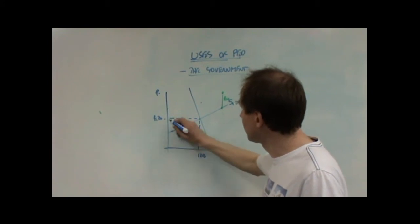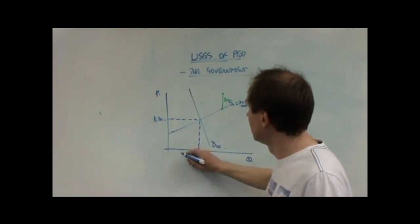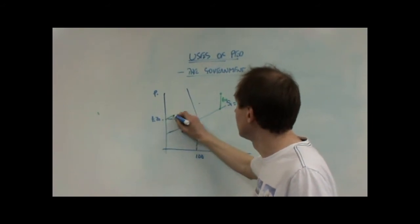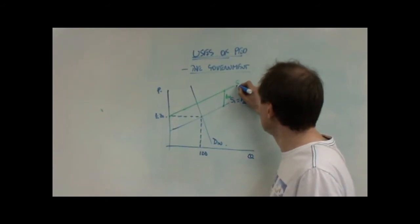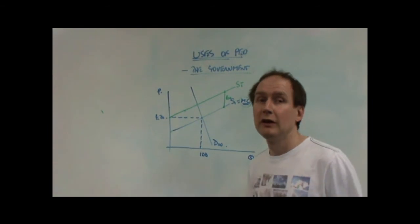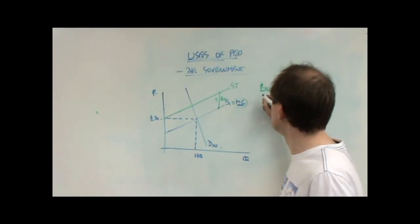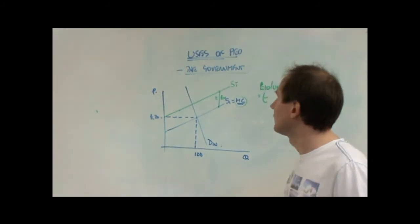There, the firm wanted 10 pounds, now it's going to want 20 pounds. There, the firm wanted 15 pounds, now it's going to want 25 pounds. The entire supply function curve is shifted by the amount of the tax. That 10 pounds there is T, which is the tax per unit.